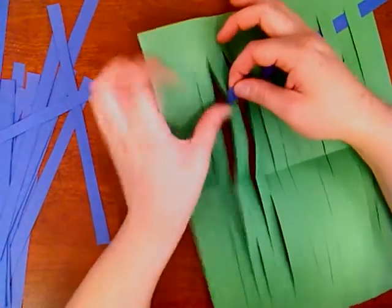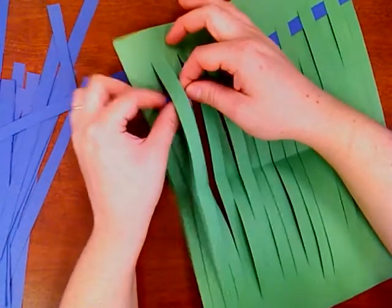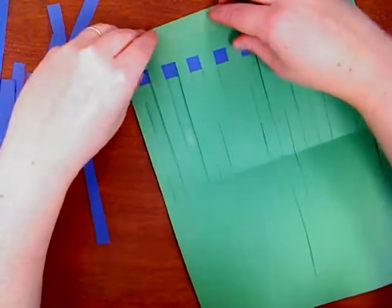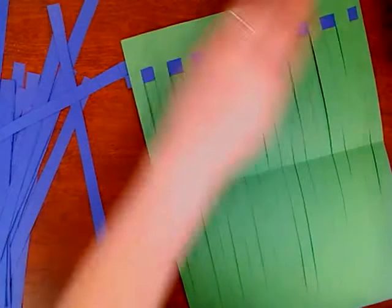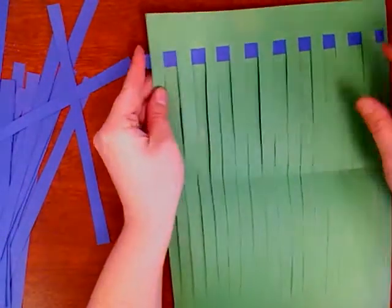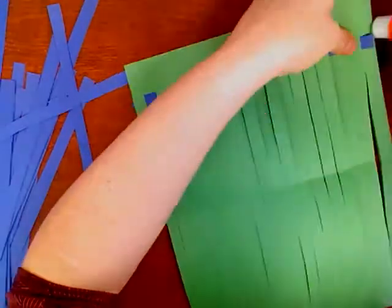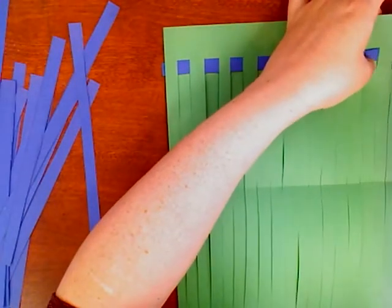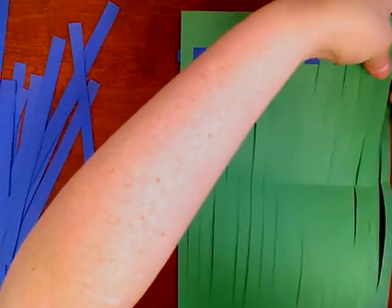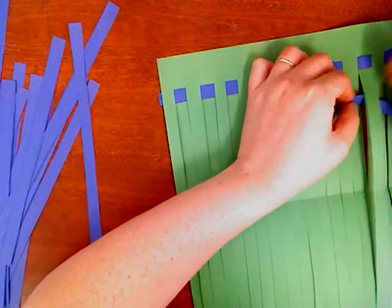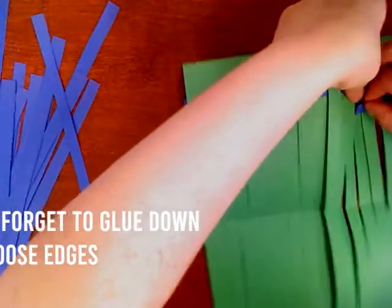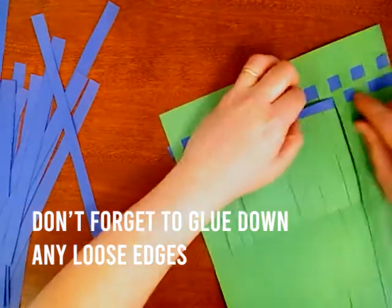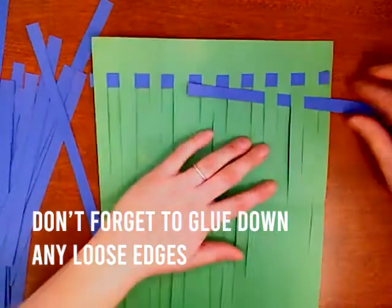If you ever make a mistake, unfortunately that means you have to remove the entire sheet and start again. Don't forget to glue down your loose ends. You don't want those papers falling out in between each layer.